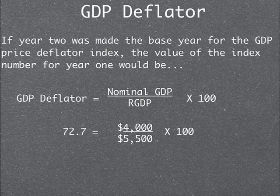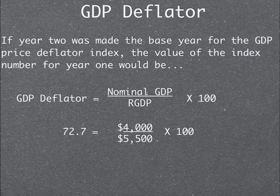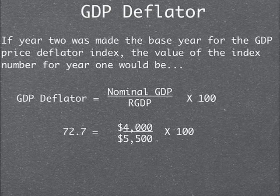The GDP deflator — if year 2 was made the base year for the GDP price deflator index, the value of the index number for year 1 would be calculated as: GDP deflator equals nominal GDP divided by real GDP times 100. So the nominal GDP would be 4,000, the real GDP would be 5,500, and times 100 gives us a GDP deflator of 72.7.